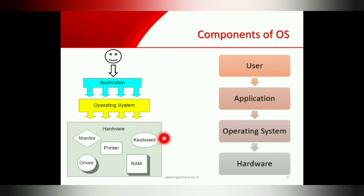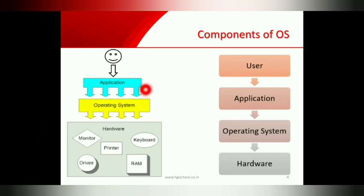Now, the pictorial representation of the components of OS. You can see hardware examples are given: monitor, printer, RAM, keyboards. Then the operating system is installed on the computer hardware, and only then are we able to install other application softwares that we use in our daily life. And then humans can use it.